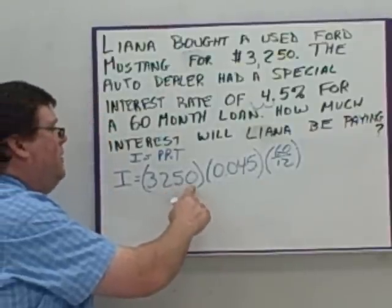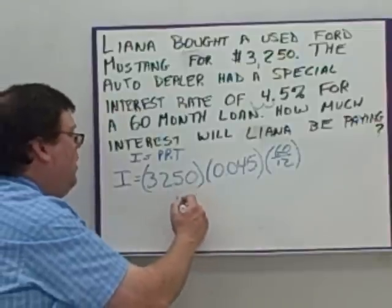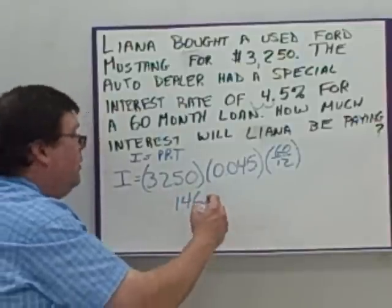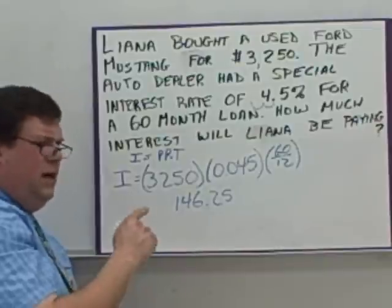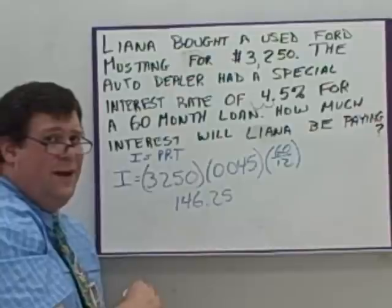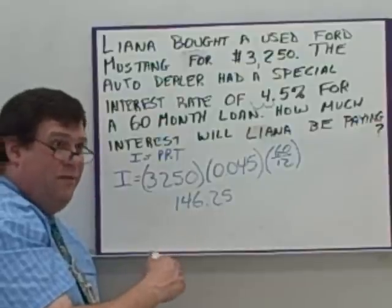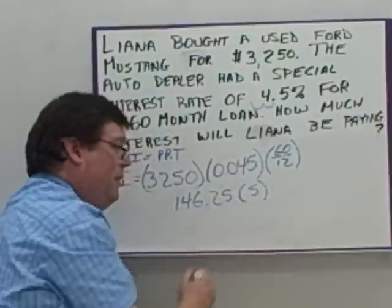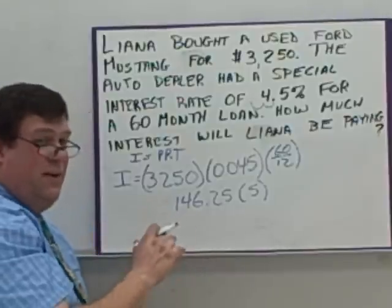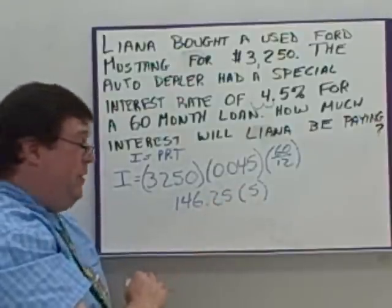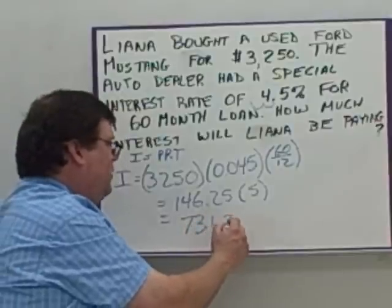We do 3,250 times 0.045 and get 146.25, and we're multiplying by 60 over 12. I know 12 goes into 60 five times — that's a whole number, so it's a lot easier to work with than a fraction. I didn't do that in the last example because 2 over 12 gives one-sixth, which is a repeating decimal. Here I'd rather work with the whole number 5. Multiplying those together gives $731.25.